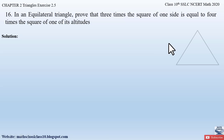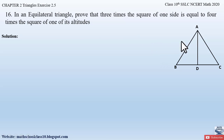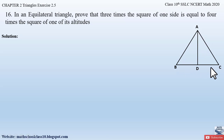They are mentioning it is an equilateral triangle, so let us draw an equilateral triangle and name it ABC. We have to also show the altitude in this equilateral triangle. Let us draw an altitude from vertex A to BC and name it AD. The altitude can be drawn from any vertex A, B, or C, so we are drawing altitude AD perpendicular to BC.